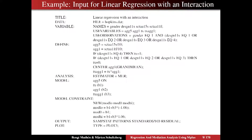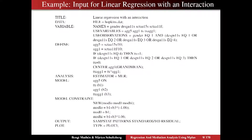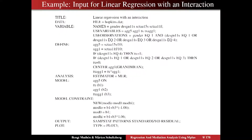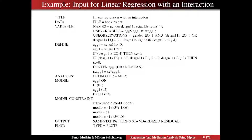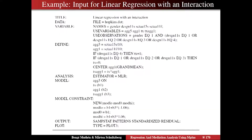We move on to the model command, in which we specify the regression. We regress ag5 on the treatment variable, the baseline aggression, and the interaction between these. So ag5 ON tx (b1), ag1 (b2), txag1 (b3). The things in parentheses are just labels for the parameters — the name of the slope. So the slope of ag5 regressed on tx is labeled b1. We have three separate rows because you can only give one label per row in Mplus, but the whole statement is ended by semicolons so it's still read as one regression.